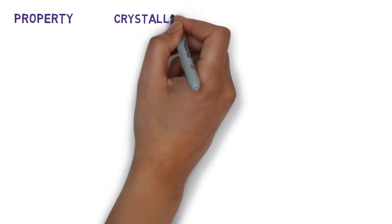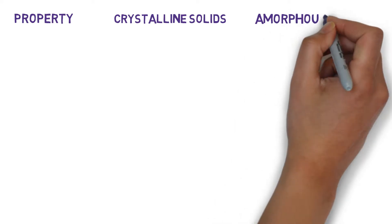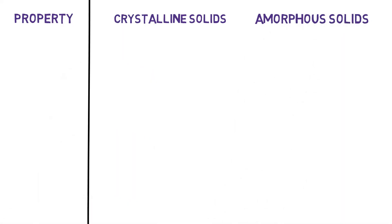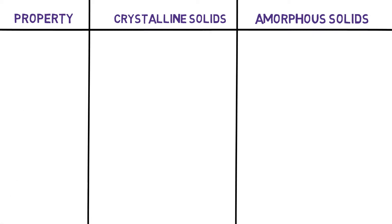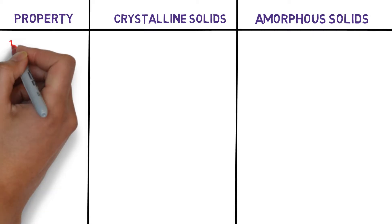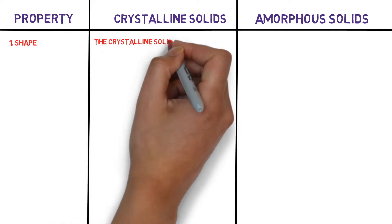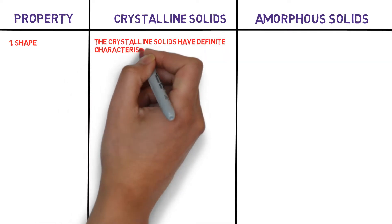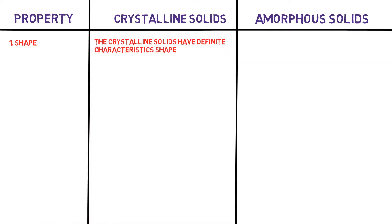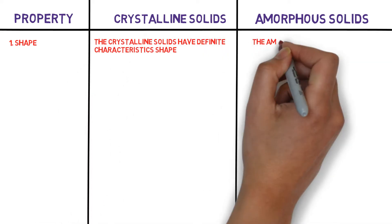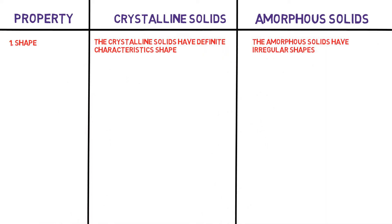Now let us discuss each type of solid one by one according to their properties. Here are some differences between crystalline and amorphous solids. The first property is shape: crystalline solids have a definite characteristic shape, whereas amorphous solids have irregular shapes.